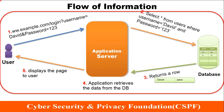The flow of information goes like this: from the user side, via a GET request, the username equals David and the password equals 123 go in the URL. From the application server to the database, it sends an SQL query: SELECT * FROM users WHERE username is David and the password is 123. In return, the database returns a row, the application retrieves the data, and then displays the page back to the user.